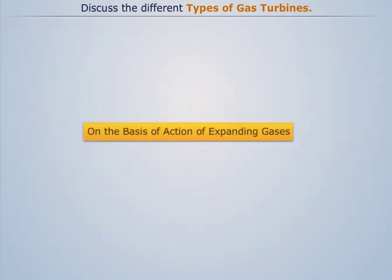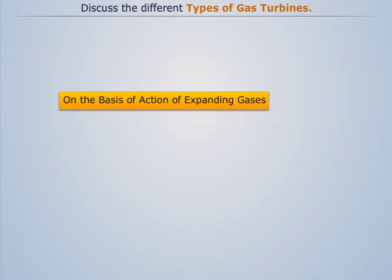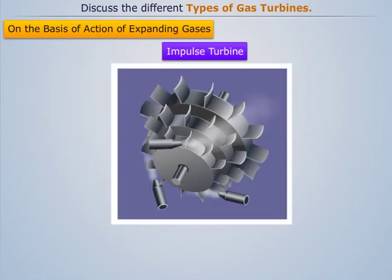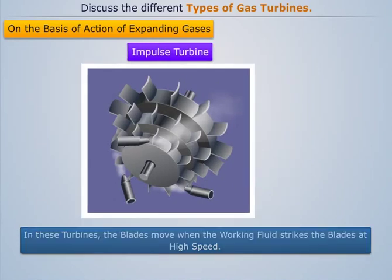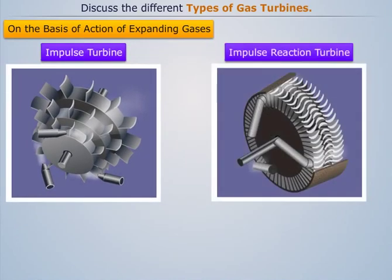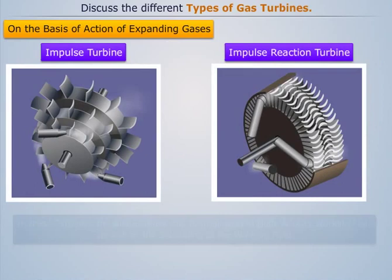On the basis of action of expanding gases, gas turbines can be divided into two types. Impulse turbine: in these turbines the blades move when the working fluid strikes the blades at high speed. Impulse reaction turbine: in these turbines the blades move due to the impinging of high velocity working fluid as well as the expanding of the working fluid.